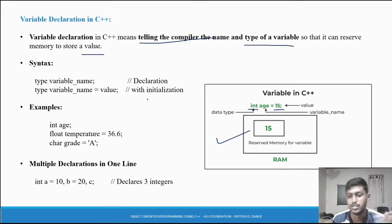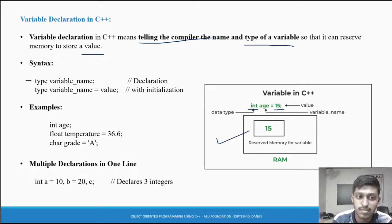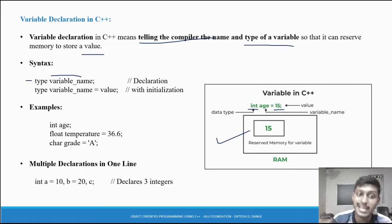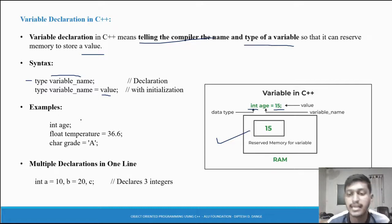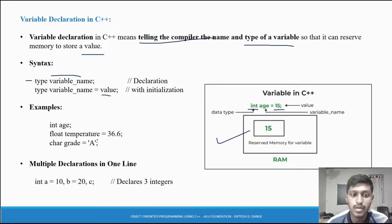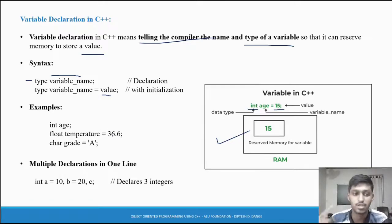Declaration means specifying the data type and variable name - no value assigned yet. Initialization means a value is allocated at the time of declaration. Example: 'int age' - this is a declaration because we have not assigned a value. 'float temperature = 36.6' - this is initialization because we have assigned the value 36.6 to the temperature variable at the time of declaration.